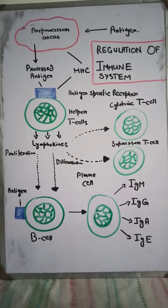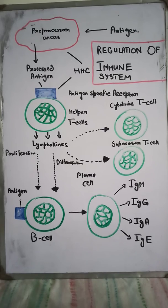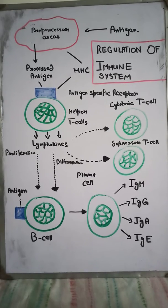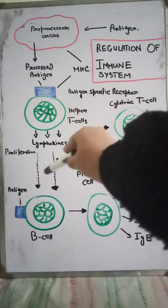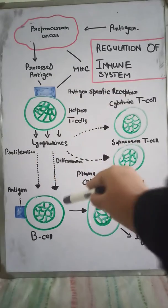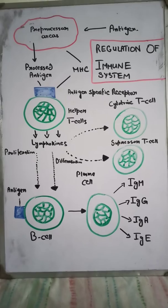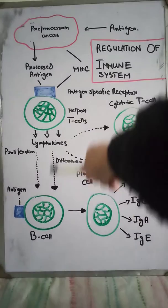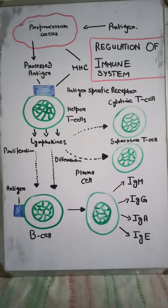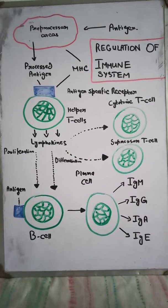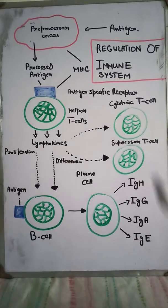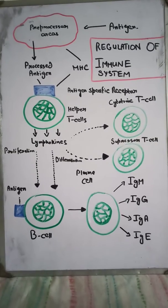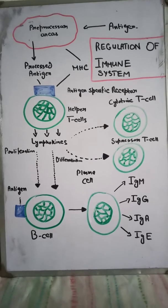These antibodies perform their function according to the type of infection, so it is important to grade these antibodies as per the infection. The lymphokines also relate to the proliferation and differentiation of B-cells, and there is also a modification and maturation mechanism towards the B-cell. Additionally, cytotoxic T-cells and suppressor T-cells are involved.